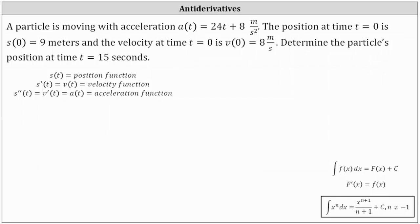A particle is moving with acceleration a(t) = 24t + 8 meters per second squared. The position at time t=0 is s(0) = 9 meters, and the velocity at time t=0 is v(0) = 8 meters per second. Determine the particle's position at t = 15 seconds.